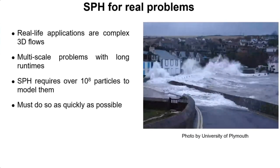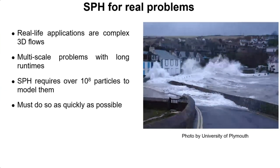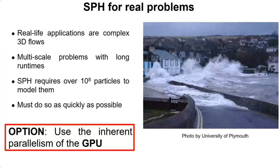Using SPH for real problems is a complicated task. Real-life applications are complex 3D flows — multi-scale problems with long run times. In this photo of coastal flooding, we have buildings several meters long, but to simulate the fluid properly we want to look at individual drops which are centimetres or millimetres in scale. To do this properly, we require about 100 million particles or more. Obviously we want to do it as quickly as possible, otherwise there is no benefit. The option most people have taken so far is to use the inherent parallelism of the GPU.